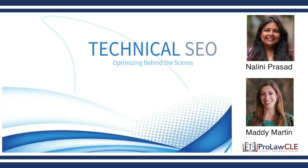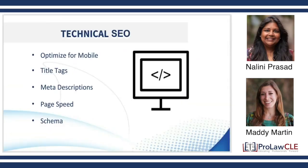Technical SEO — I'm going to go through this a little quicker. Technical is essentially all the stuff that happens behind the scenes; your development team handles most of this. Optimizing for mobile is the biggest thing you can do. For every action in your WordPress backend or whatever platform you're using, there is an equal action you need to take to have your mobile site optimized.